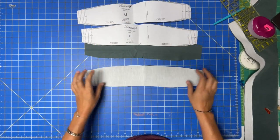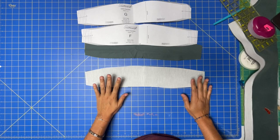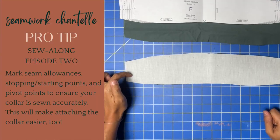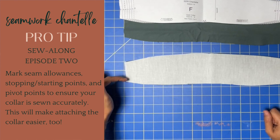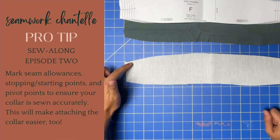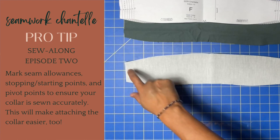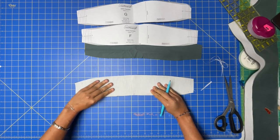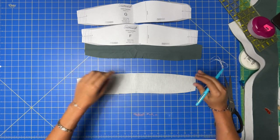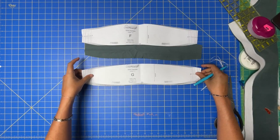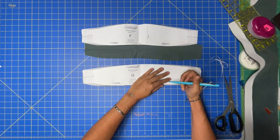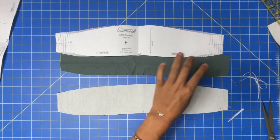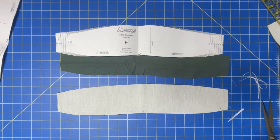G is the one that I am going to use to mark these seam allowances, because the three-eighths inch seam allowance is so important for the collar—not only the stopping and starting point, but also the pivot point. I'm going to be marking on the interfaced side, mostly because it's super easy to see on the white interfacing.